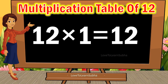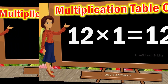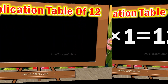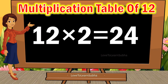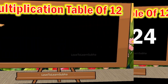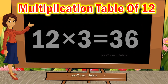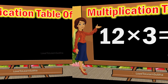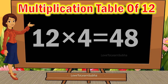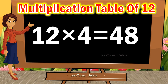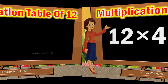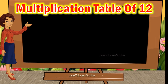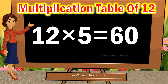12 1s are 12. 12 2s are 24. 12 3s are 36. 12 4s are 48. 12 5s are 60.